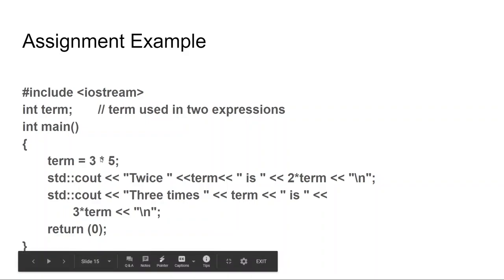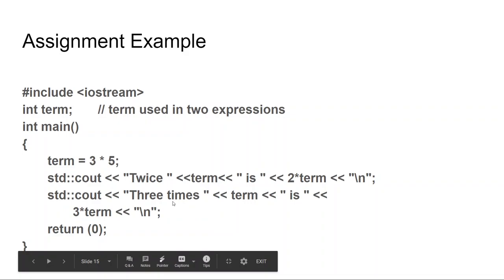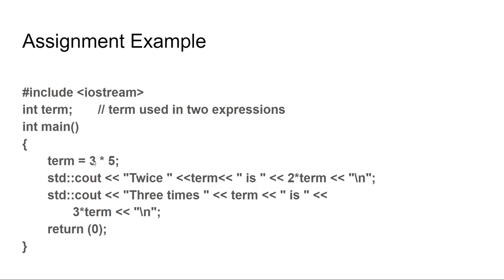In this assignment example, term equals 3 times 5 — so term now has 15 stored in it. Twice_term is 2 times term. Three_term is 3 times term. Notice that we can use term just like the number stored in it. The two things are kind of the same thing at that point.